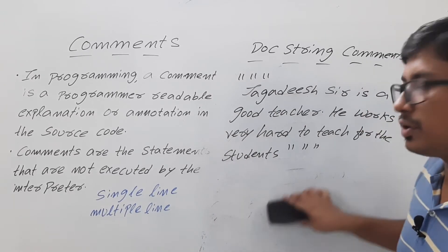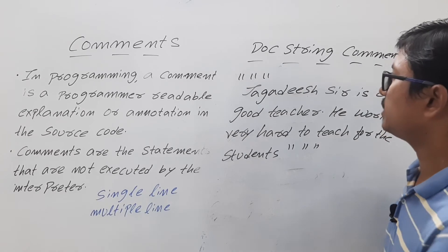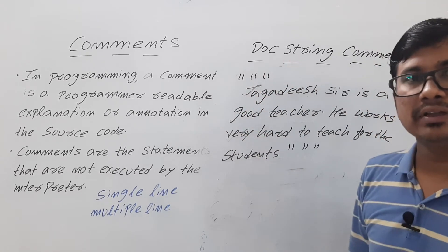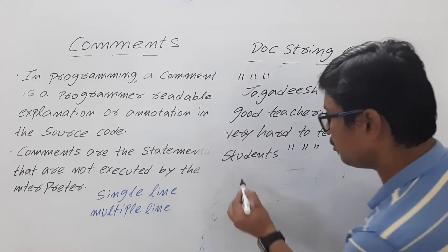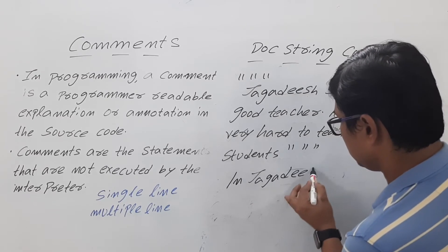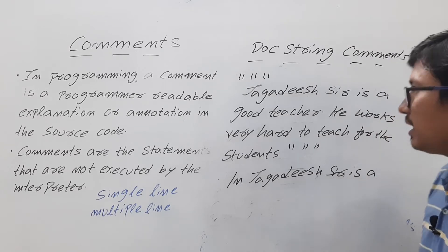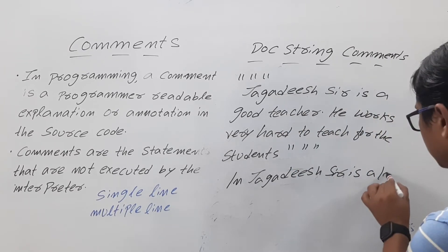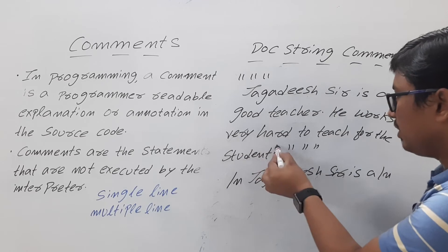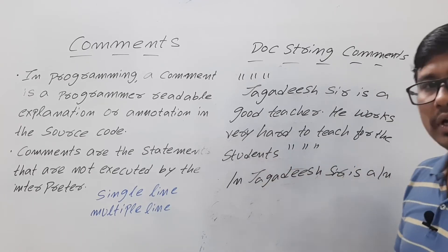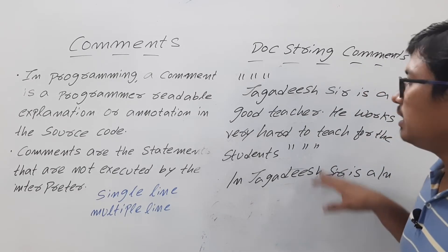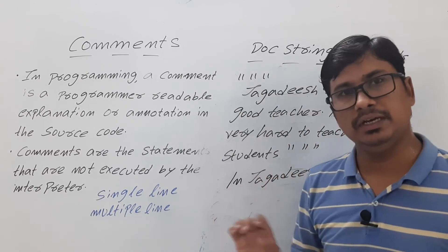If you write only the documentation section without any code and execute it, look at what happens: I have written the triple double quotes, then the content on new lines. Wherever a new line occurs inside the doc string, it will print as a backslash-n in the output. So it prints the string with backslash-n wherever there is a line break.